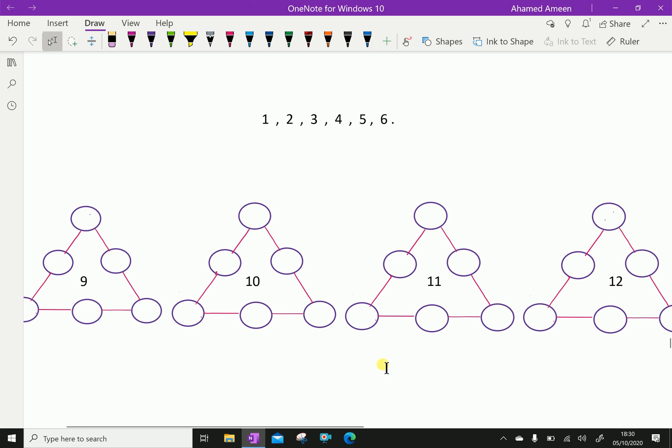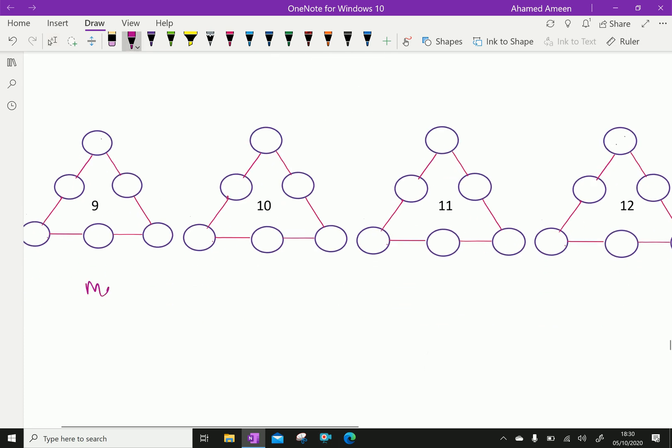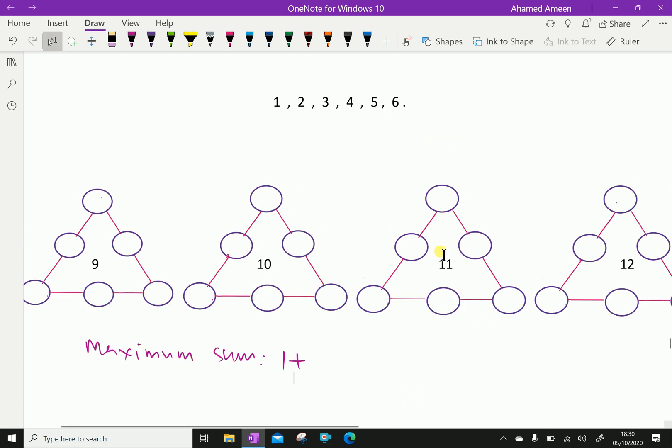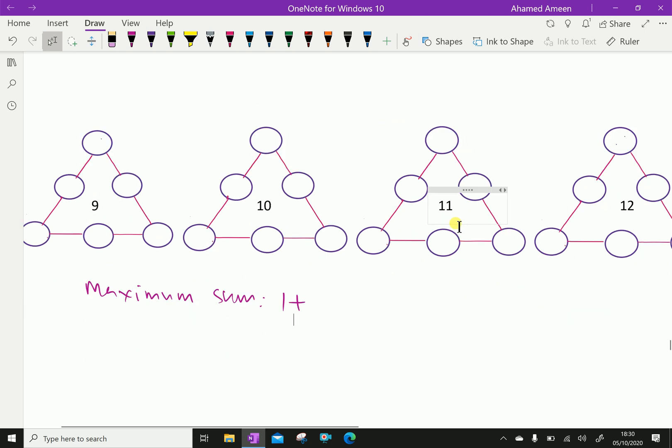Look at here. First, the numbers are given 1, 2, 3, 4, 5, 6. Therefore, the maximum sum is 1 plus the last two numbers, 5 plus 6, which is equal to 12. This is the maximum number.